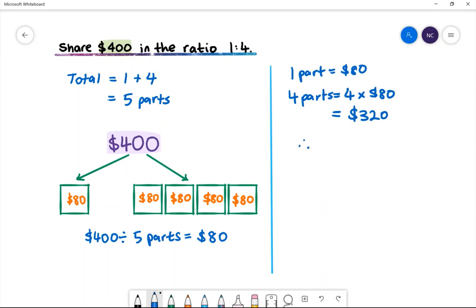Therefore, $400 shared in the ratio 1 to 4 will yield $80 to $320.